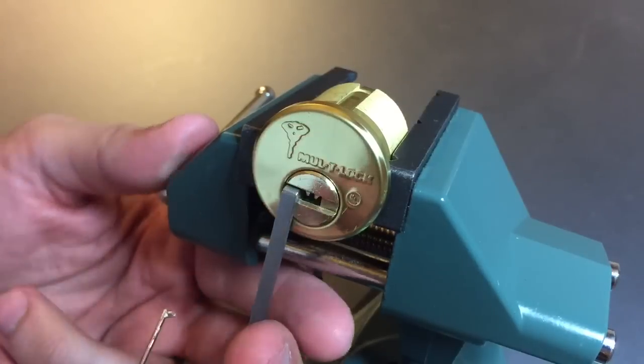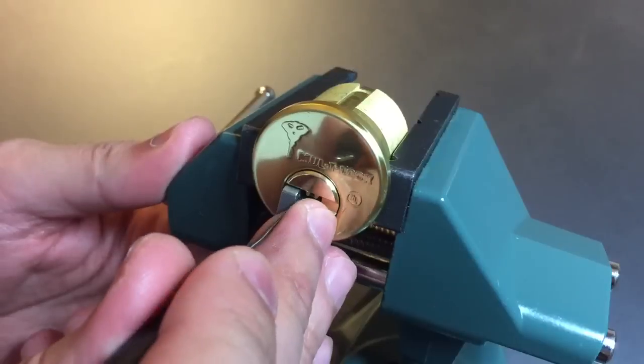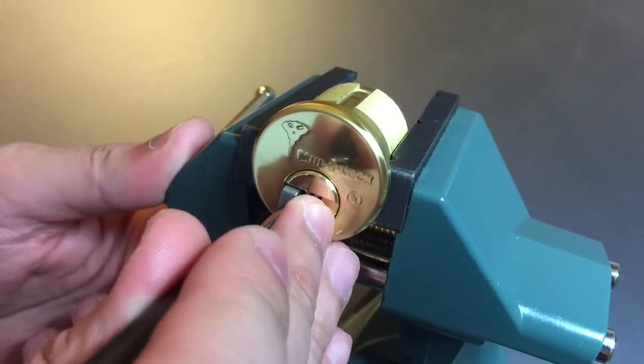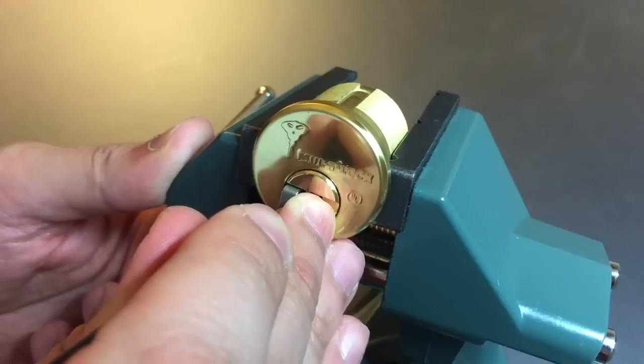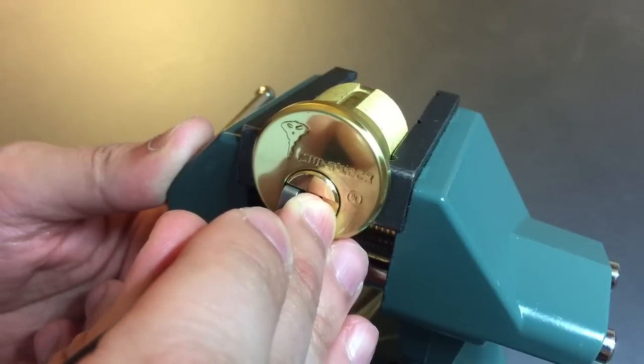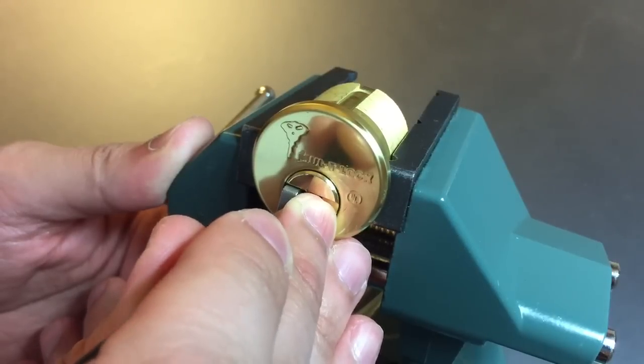We're going to start looking for binding outer pins. One is loose, two is loose. Okay, got a click out of three, still binding. Another click out of three—this one's definitely serrated. Okay, nice big click and I think we just got three set, moving on to four.